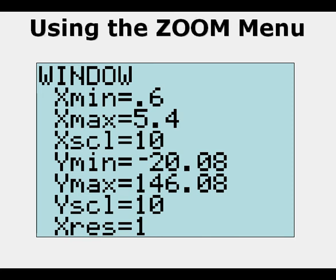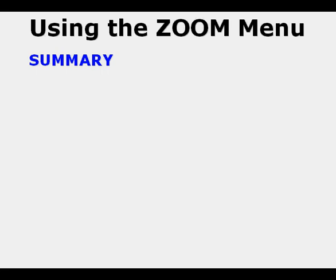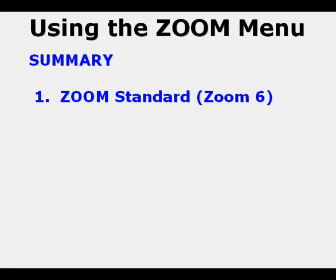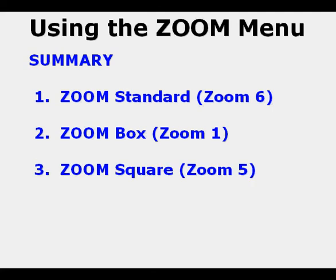So again, to summarize, four uses of the zoom menu. One, zoom standard, which is zoom 6. Maybe the two most used keystrokes on your graphing calculator at some point. Second, zoom box, which is zoom 1, which is used for looking at roots and so forth in tight quarters. Three, zoom square, zoom 5, it brings the view screen back to geometric proportionality. And finally, zoom stat, which is zoom 9, which gives us a look at our points that are in our plot. I hope this has been helpful to you. Keep on studying.